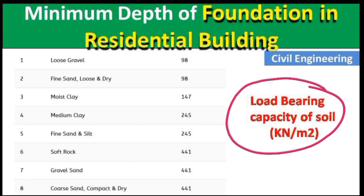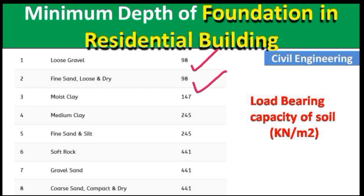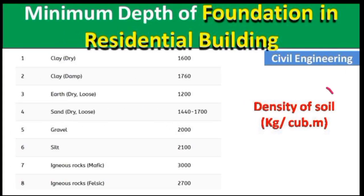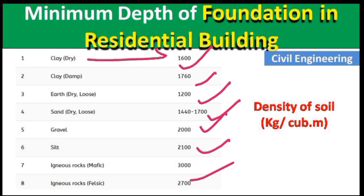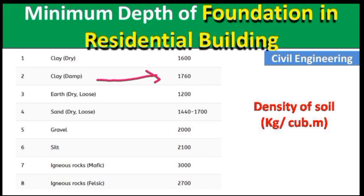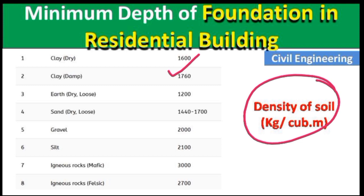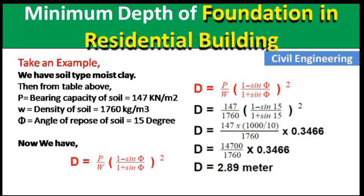The load-bearing capacity of soil for different types: loose gravel and fine sand (loose and dry) is 98 kN/m², moist clay is 147 kN/m², medium clay is 245 kN/m². For soil density: damp clay is 1760 kg/m³, and dry loose clay is around 1200 kg/m³. Again, these are average values — you should always conduct lab tests to get actual values for your specific site.